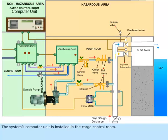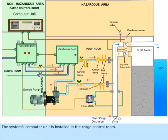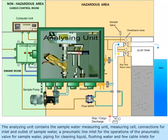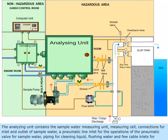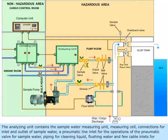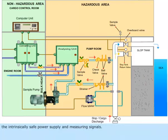The system's computer unit is installed in the cargo control room. The analyzing unit contains the sample water measuring unit, measuring cell, connections for inlet and outlet of sample water, and a pneumatic line inlet for operation of the pneumatic valve for sample water.